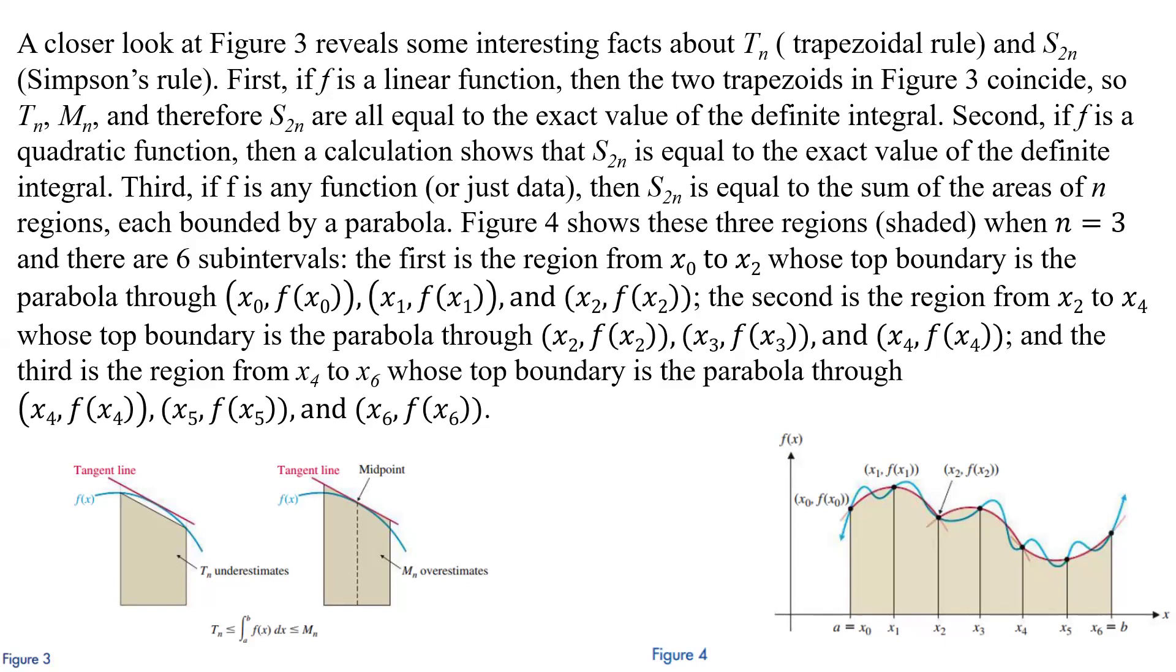Now first, if F is a linear function, then the two trapezoids in figure 3 are basically going to coincide because it's a linear function, so it's just going to be laying right on top here and laying right on top there. So the blue line would be straight, just the same as the red line.